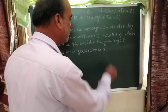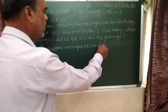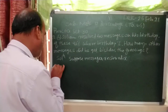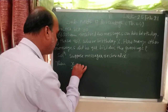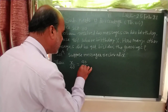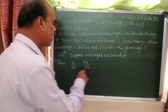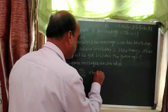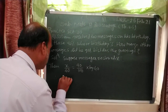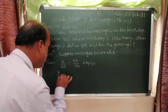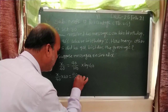Let X percent be the number of other messages. Suppose X. Then X upon 40 is equal to 90 upon 100. Multiplying this ratio by 40 on both sides: X upon 40 into 40 is equal to 90 upon 100 into 40.